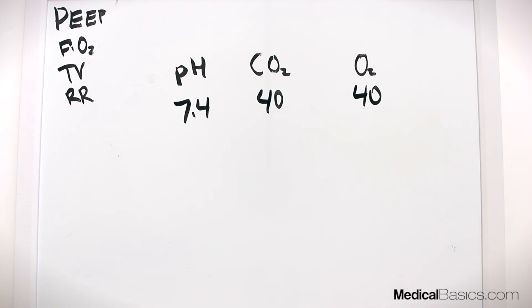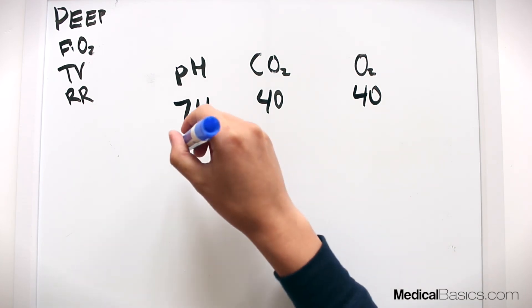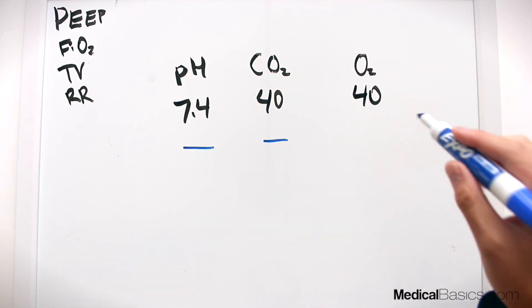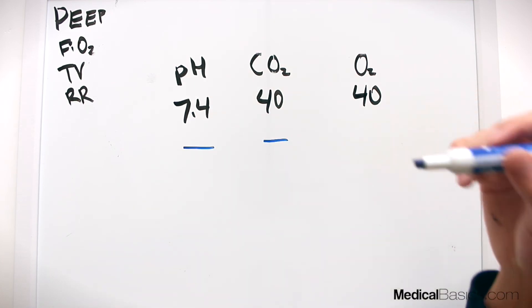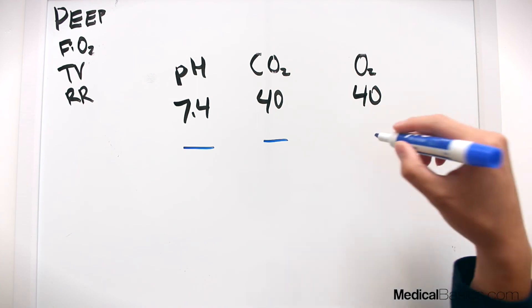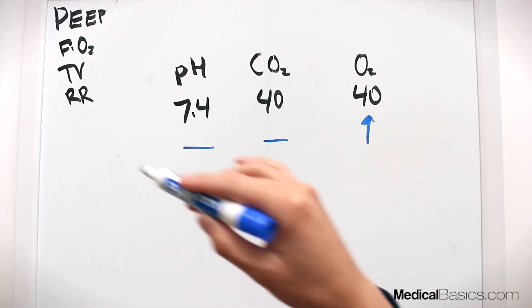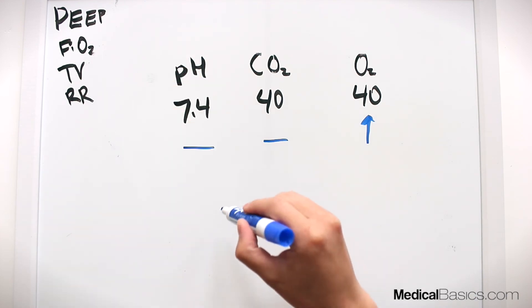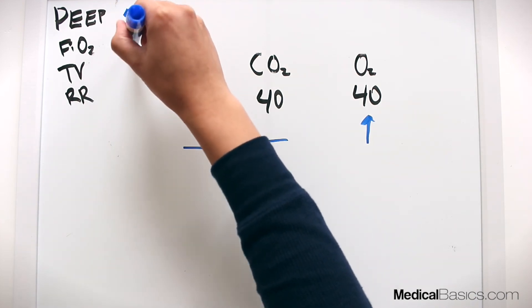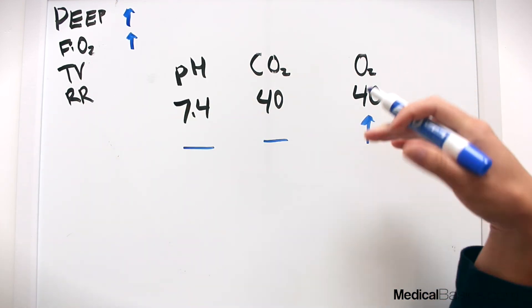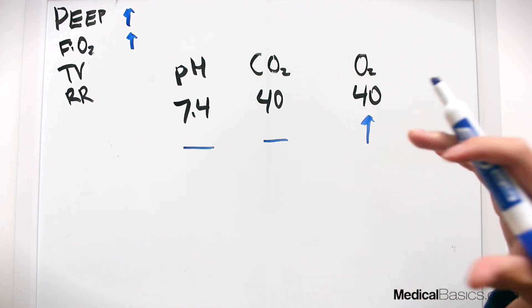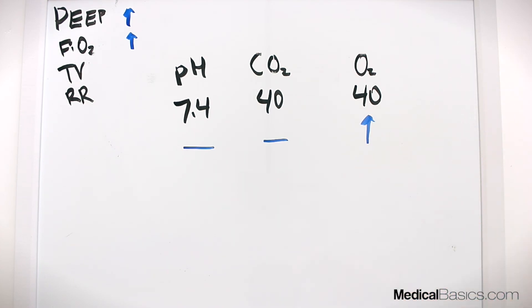Now let's walk through a different example where we have a pH of 7.4, a CO2 of 40. So both of those are normal, but now our O2 is 40, which is much lower than what we would want. So we want to drive that up. And so how do we go about doing that? Really it's PEEP as well as FiO2. We just increase PEEP and we increase FiO2 and that will hopefully be able to increase our oxygenation. And so there's actually a very good table that you could go through. It's called ARDSnet Ventilator Protocol that has a table of how exactly you change FiO2 and how you change PEEP.